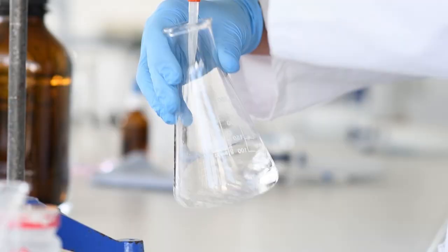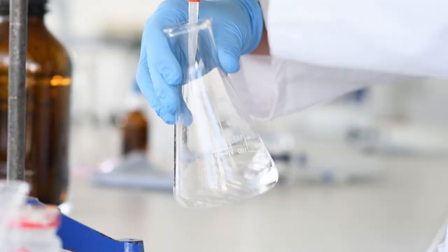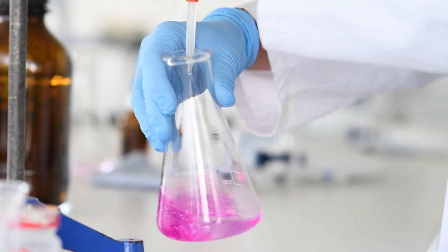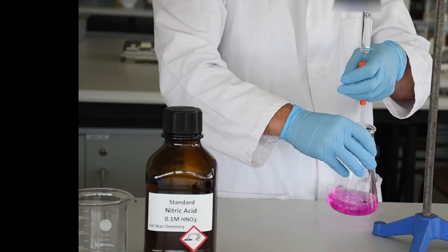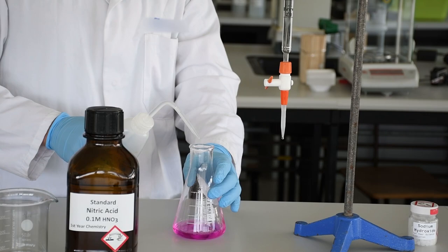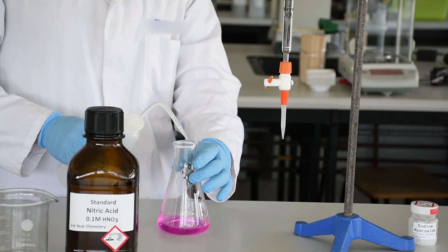We've reached our endpoint. One more drop maybe is going to get us there, and we get a solid pink color that doesn't go away. We leave it to stand for a few seconds, and once we're sure, we wash down the edges with a little bit of distilled water. If the pink color does disappear, you'll have to add one more drop from your burette. At this point, we've added enough sodium hydroxide from our burette to react with all of the nitric acid that was in the 25 mil we transferred with our pipette.